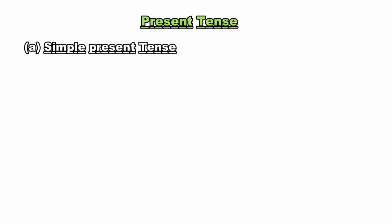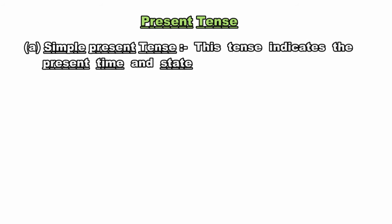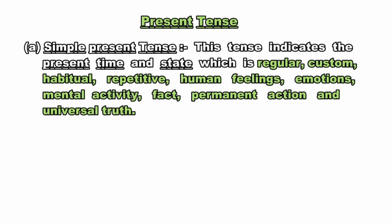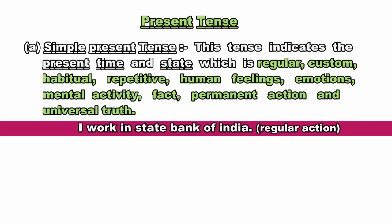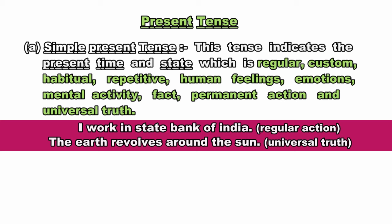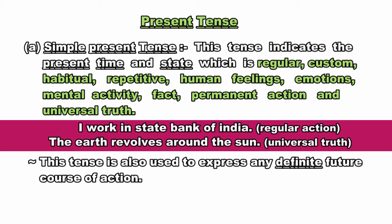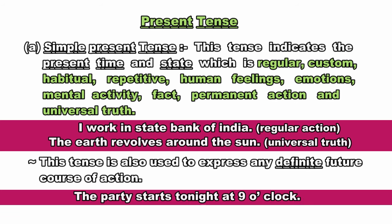Now let us see the uses of simple present tense. This tense indicates the present time and state which is regular, customary, habitual, repetitive, expressing human feelings, emotions, mental activity, fact, permanent action, and universal truth. Like: 'I work in State Bank of India', 'The earth revolves around the sun.' This tense is also used to express any definite future course of action — like 'The party starts tonight at 9 o'clock.' Simple present tense se related rules main sabhi tenses padhne ke baad discuss karungi.